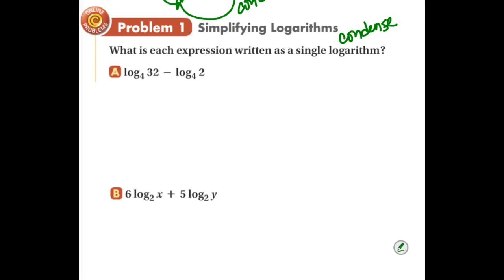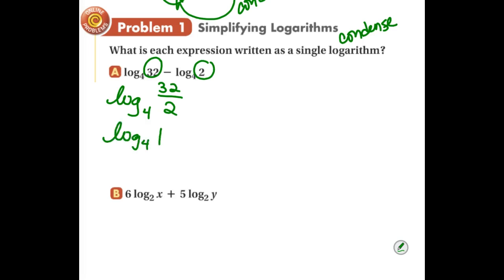Subtraction condenses back into division. So I'm going to put this down as log base 4 of 32 divided by 2 — that's like the m and the n in my property. What is 32 divided by 2? This becomes the log base 4 of 16. We know what that is from last week — 4 to what power gets me 16? The log base 4 of 16 is just 2. It's the power we'd have to raise our base to get 16. So this whole thing becomes a 2.